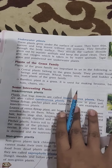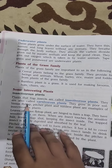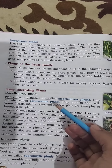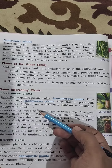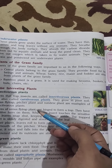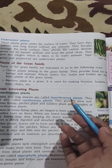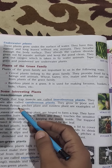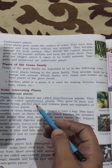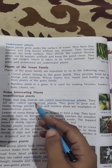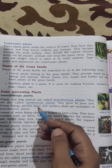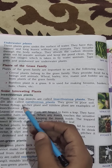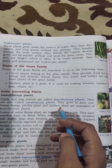Now some interesting plants — insectivorous plants. These are plants that trap insects. Examples of insectivorous plants are Venus flytrap, pitcher plant, and sundew plant. You should know these examples.